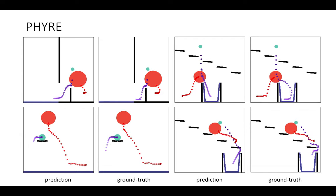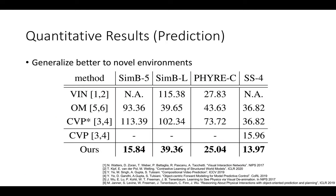Beyond in-distribution testing, we also evaluate on unseen and novel environments. We test a model trained on three billiard balls on five billiard balls, extend the model to 60 unrolling steps instead of 20 or 40, and test on a leave-one-out environment in PHYRE that was not seen during training. We achieve much better generalization results compared to previous methods.